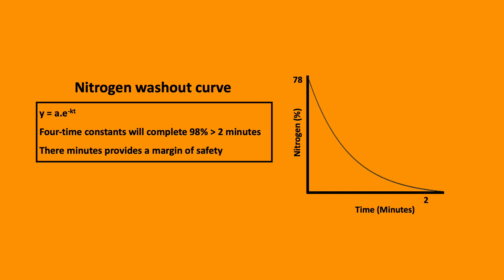The process of oxygen wash-in and nitrogen wash-out follows an exponential function. The rate of this process is based on the time constant, which is determined by the size of the FRC. One time constant achieves 63%, two achieves 86%, three achieves 93%, and four achieves 98%. Four time constants for the nitrogen wash-out curve is approximately two minutes, and thus we pre-oxygenate for three minutes to provide a margin of safety.